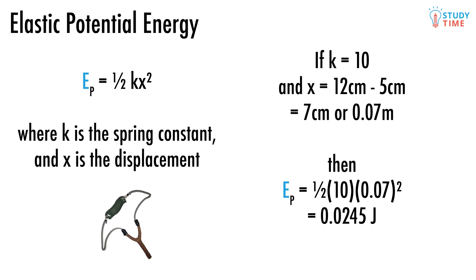Let's say that we've taken a spring with a spring constant of 10. Normally the spring is 5 centimeters long, but we've stretched it to 12 centimeters. How can we find the potential energy that's stored in the spring? Firstly, we need to find the displacement of the spring. It's changed from 5 to 12 centimeters, which is a displacement of 7 centimeters, or 0.07 meters.